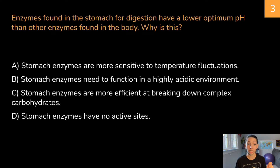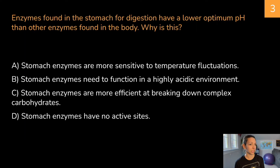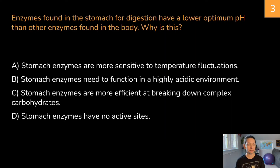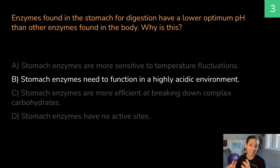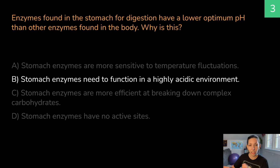Question three: enzymes found in the stomach for digestion have a lower optimum pH than other enzymes found in the body — why is this? The correct answer is B: stomach enzymes need to function in a highly acidic environment. Remember, we have stomach acids. If something is very acidic, it's lower on the pH scale. So stomach enzymes have a lower optimum pH, meaning they operate better where acidity is high. The more acidic something is, the lower its pH; the more basic, the higher its pH.